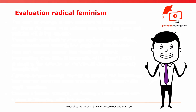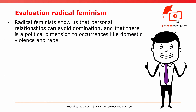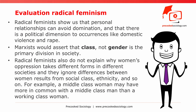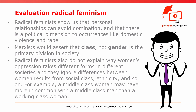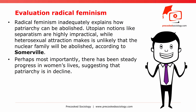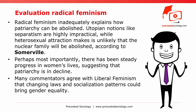Evaluation of Radical Feminism: radical feminists show us that personal relationships can involve domination, and that there is a political dimension to occurrences like domestic violence and rape. On the other hand, Marxists would assert that class, not gender, is the primary division in society. Radical feminists also do not explain why women's oppression takes different forms in different societies, and they ignore differences between women resulting from social class, ethnicity, and so on. For example, a middle-class woman may have more in common with a middle-class man than a working-class woman. Likewise, radical feminism inadequately explains how patriarchy can be abolished. Utopian notions like separatism are highly impractical, while heterosexual attraction makes it unlikely that the nuclear family will be abolished, according to Somerville. Perhaps most importantly, there has been steady progress in women's lives, suggesting that patriarchy is in decline, and many agree with liberal feminism that changing laws and socialization patterns should bring gender equality.